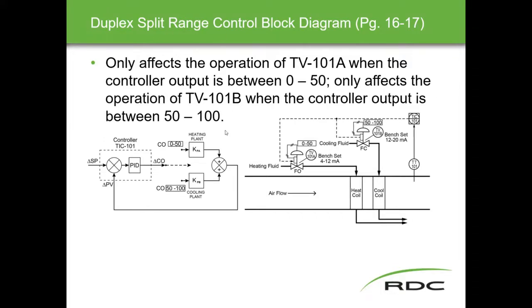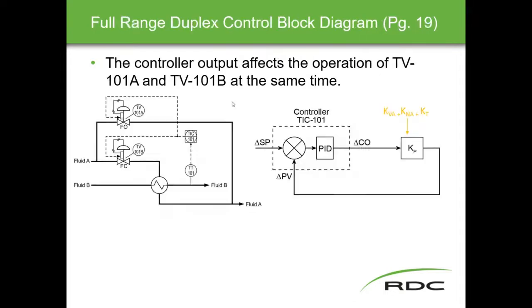For the full range duplex block diagram, it's slightly simpler: the controller affects the operation of both TV108 and 101B simultaneously. You can see the signal coming out of the controller being split to both valves. The plant gain block combines valve gain, process gain, and transmitter gain into a single block. So: full range duplex gives essentially one transfer function, whereas split range duplex gives two transfer functions.